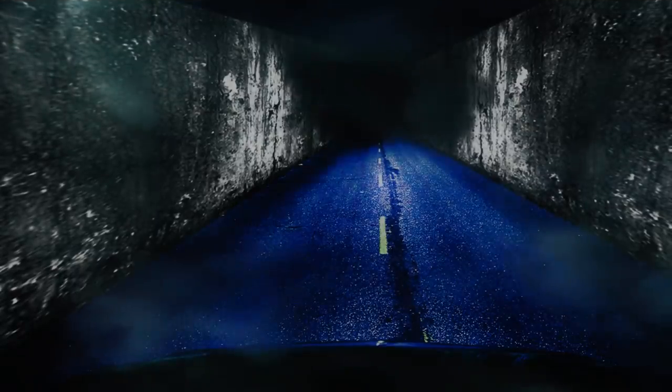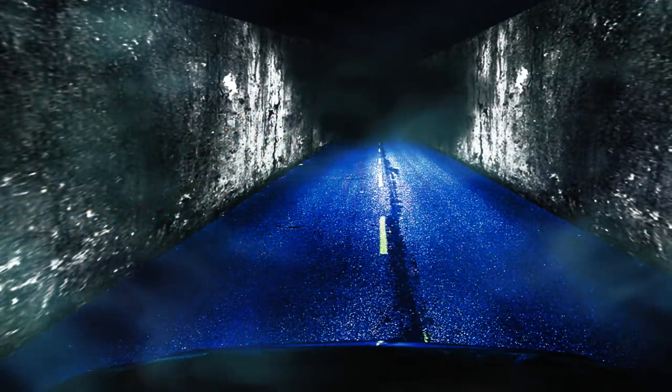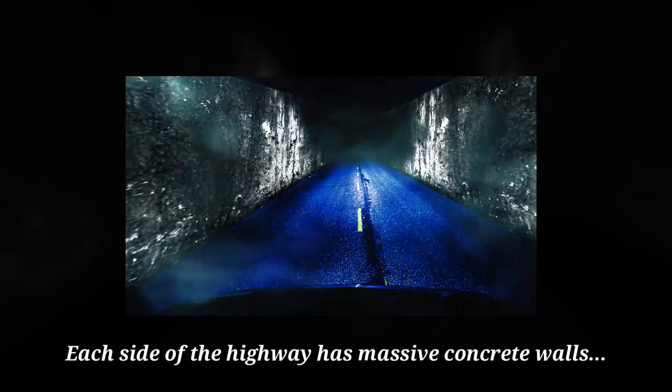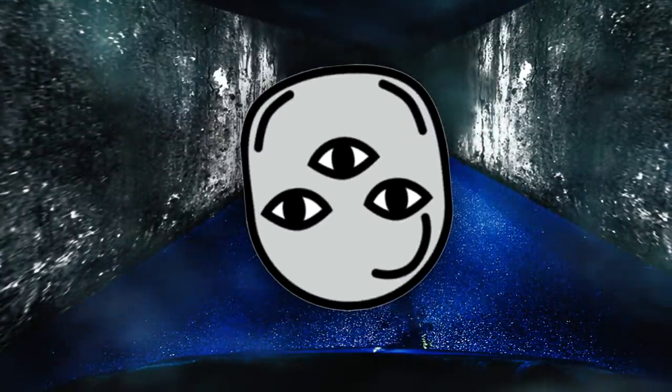Level 69 looks like a dark and empty infinite highway that has fog rolling at all times. Each side of the highway has massive concrete walls that seem to be infinite in height and there's literally nothing else here. Like, that's it.